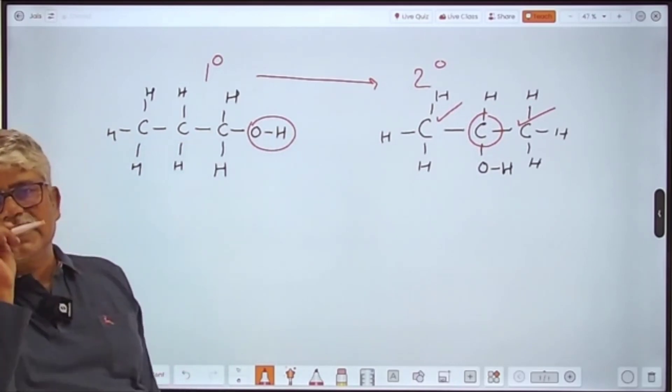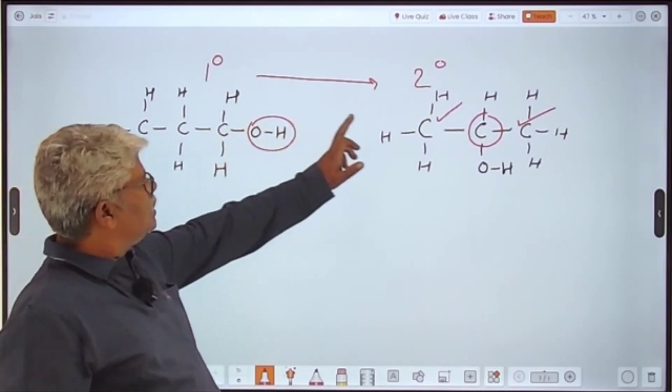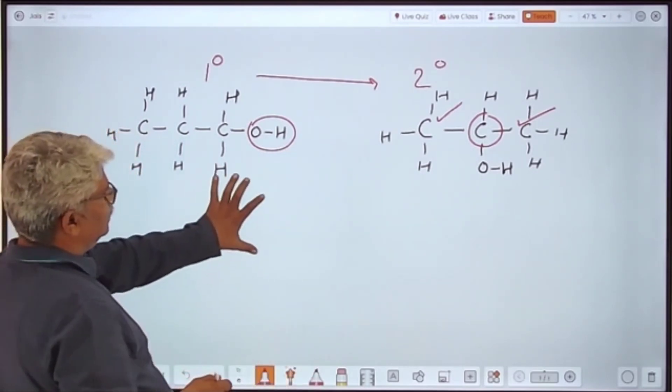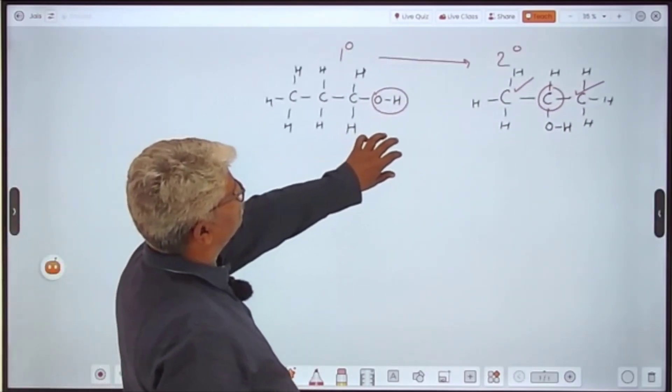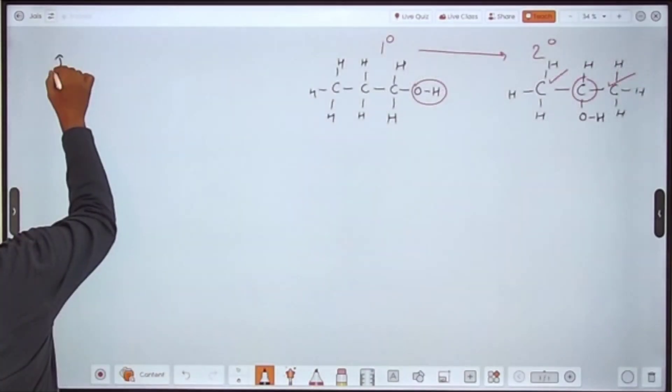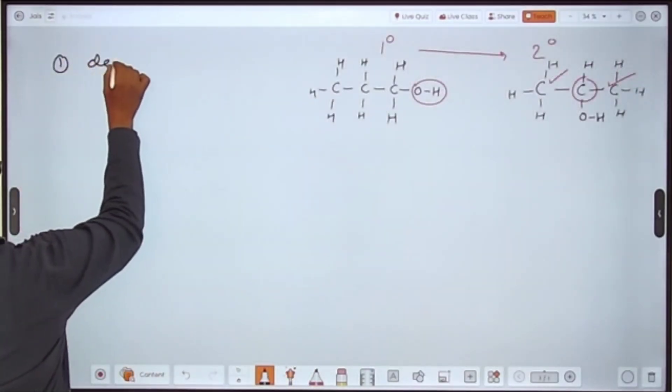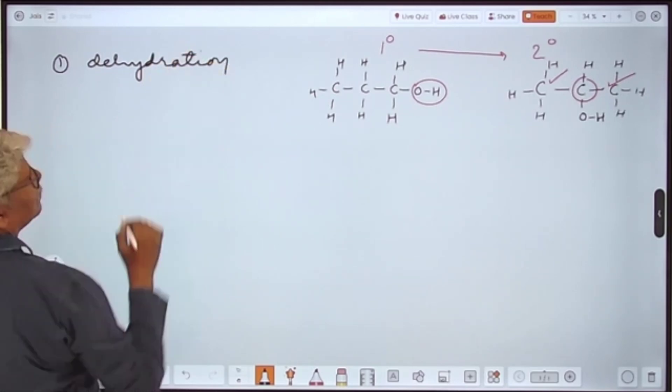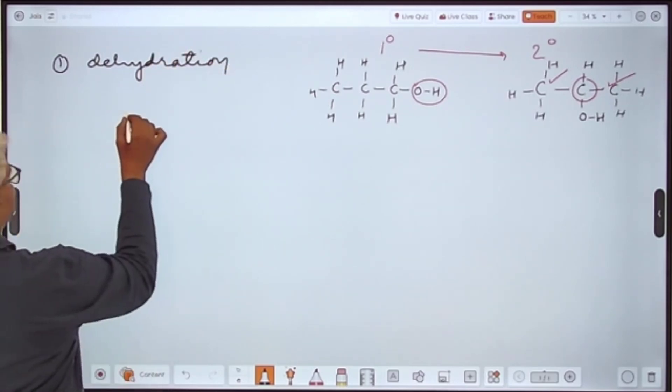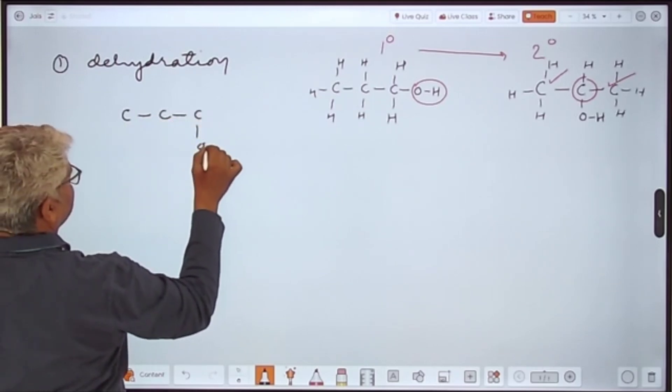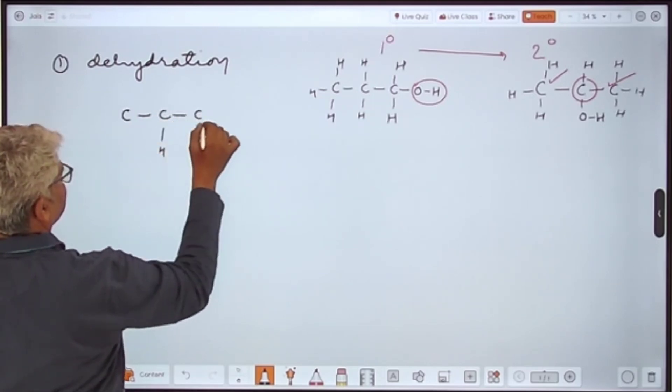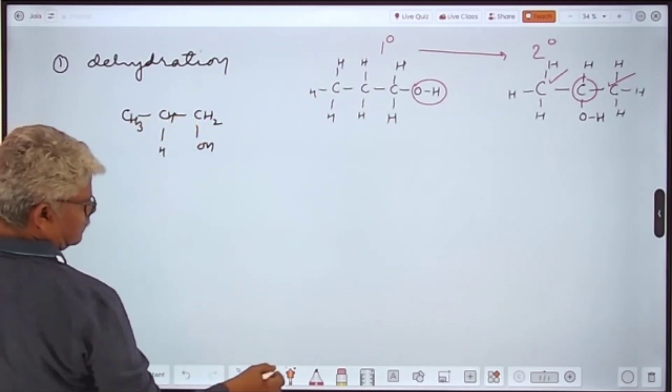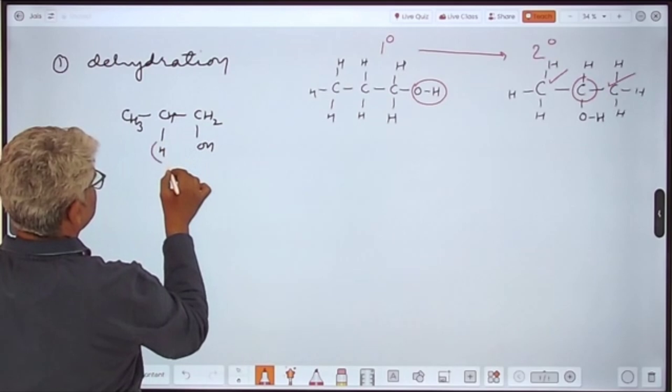So the question today is how to come from this position to this position. That can be done through dehydration. Let us see. Number one is dehydration, that is removal of chemically combined water. This is removed.